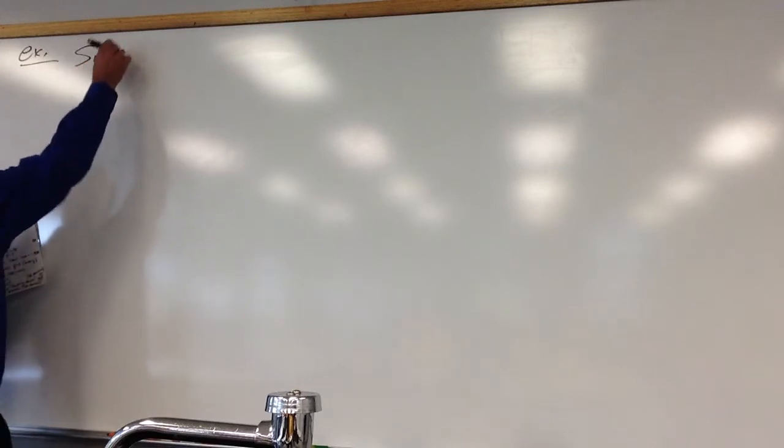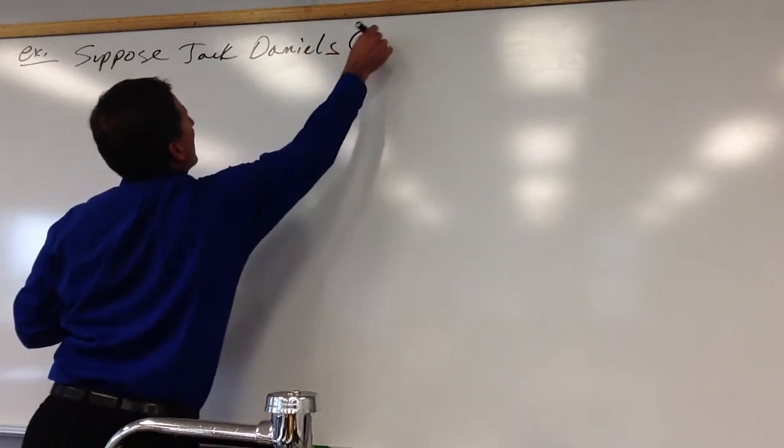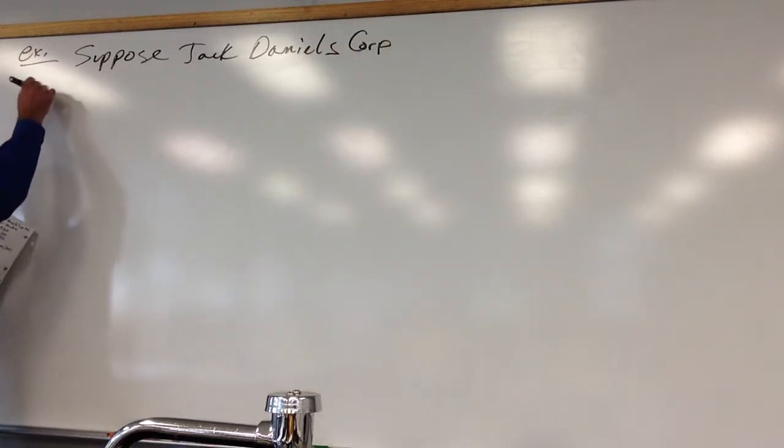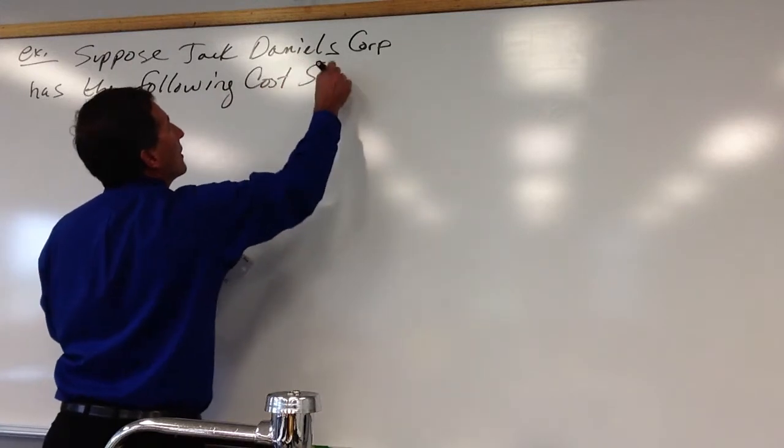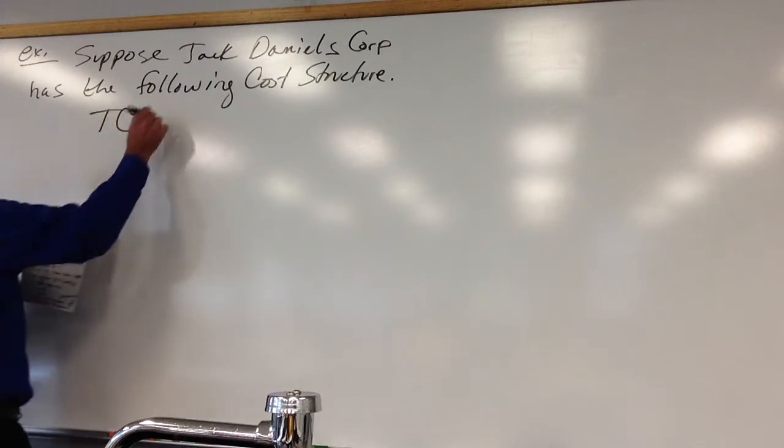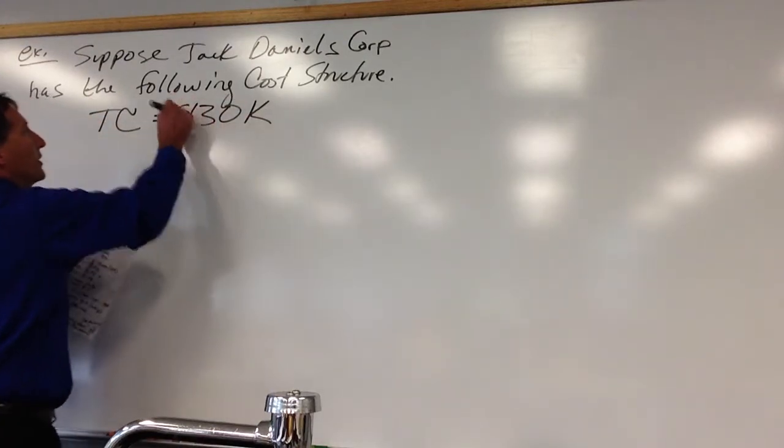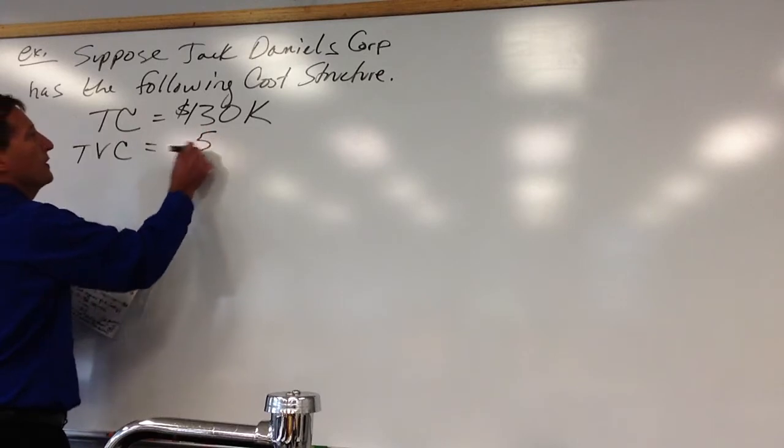I want to start off with a different path today, thinking about whiskey. For example, suppose Jack Daniels Corporation has the following cost structure. Total cost of doing their business is $130,000.